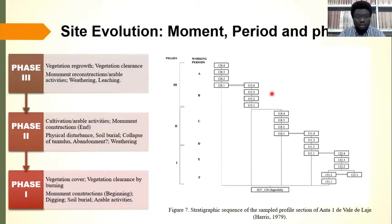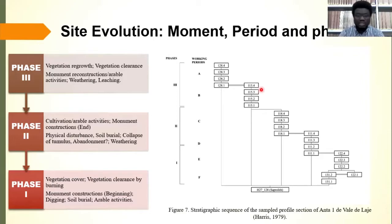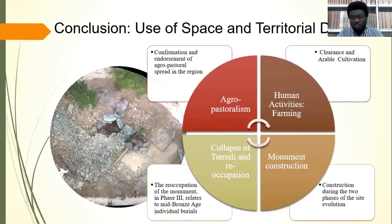In Phase 3, the site was reoccupied again. There was vegetation regrowth and subsequent clearance — this time by implement, unlike Phase 1 which was characterized by burning. There was monument reconstruction, followed by arable activities, and then natural processes of wedging and leaching.